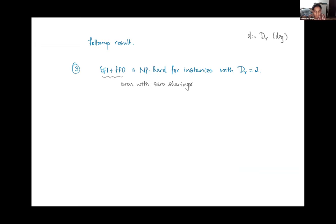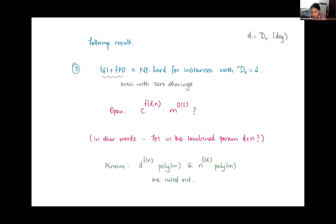One is that if the number of agents is unbounded and the degeneracy is constant, we do get NP hardness. We can show that it's NP hard for instances with a large number of agents with bounded degeneracy. But what is not clear is if the problem is fixed parameter tractable as it were in the combined parameter number of agents and degeneracy.